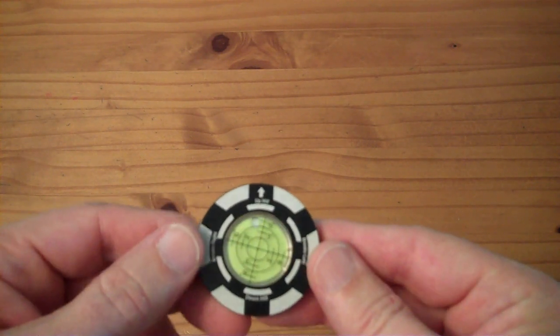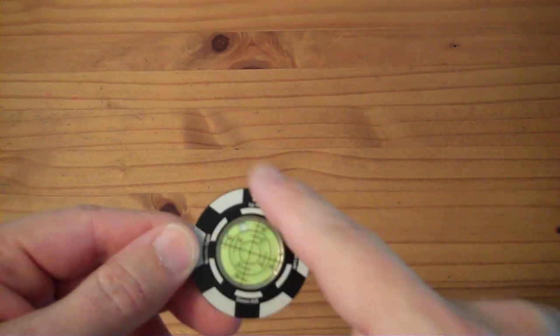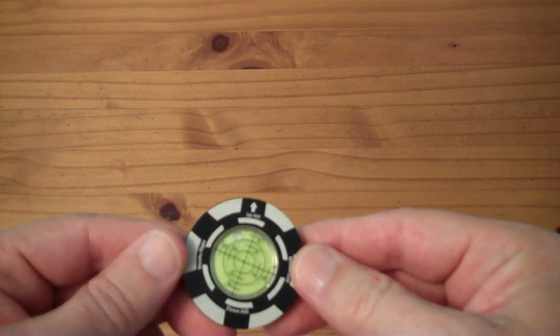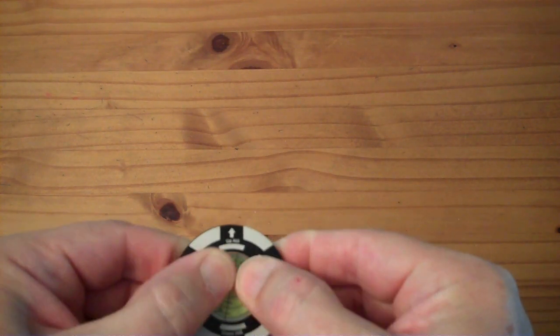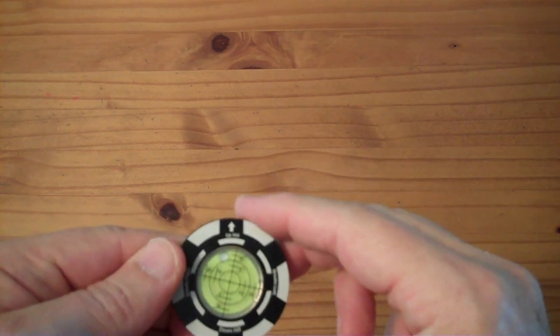One thing that bothers my OCD is this crosshair is not lined up with the kind of pointer to the bubble, to the hole. It's not going to matter, it works the same. If it were me, I would rotate that thing so that line would be there.